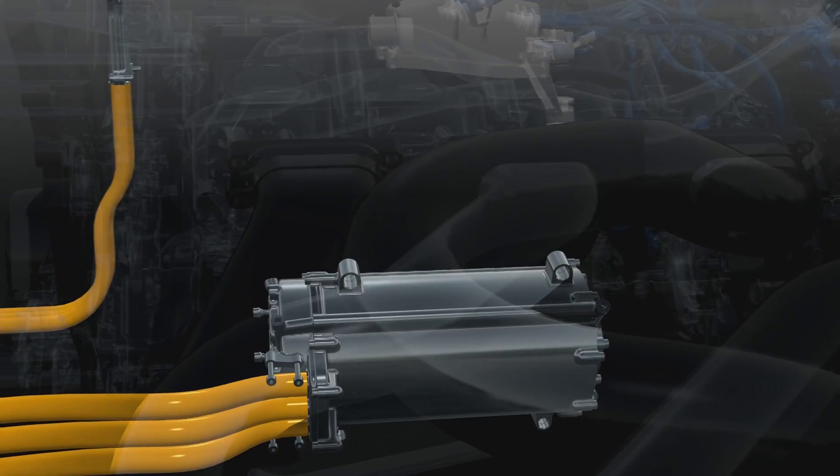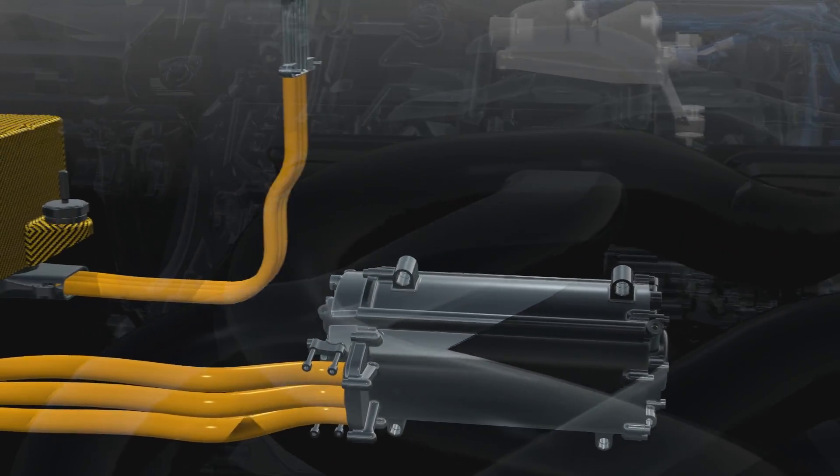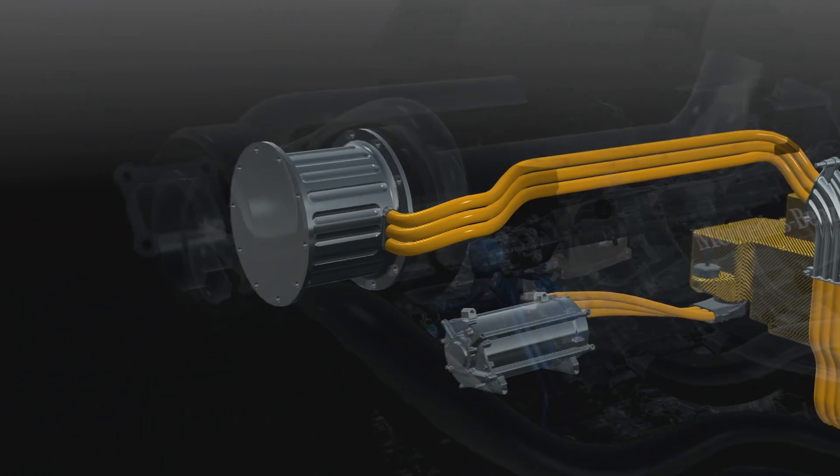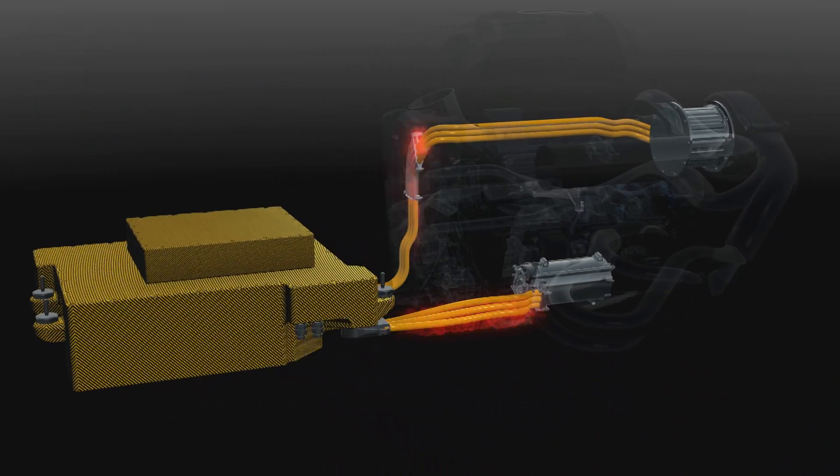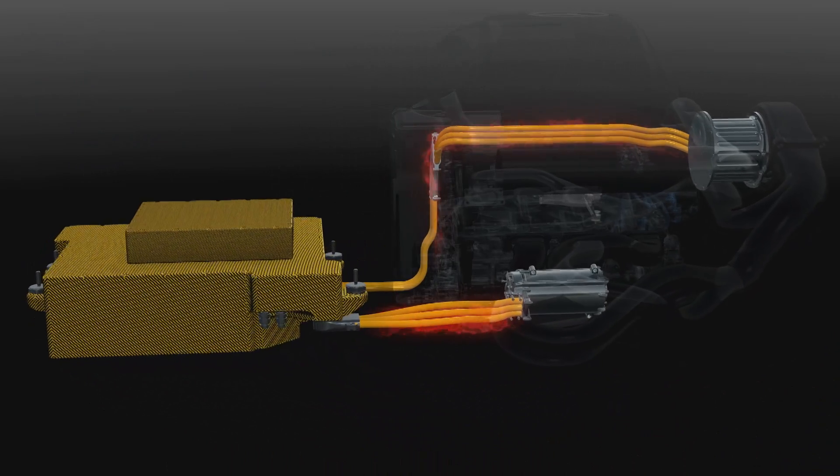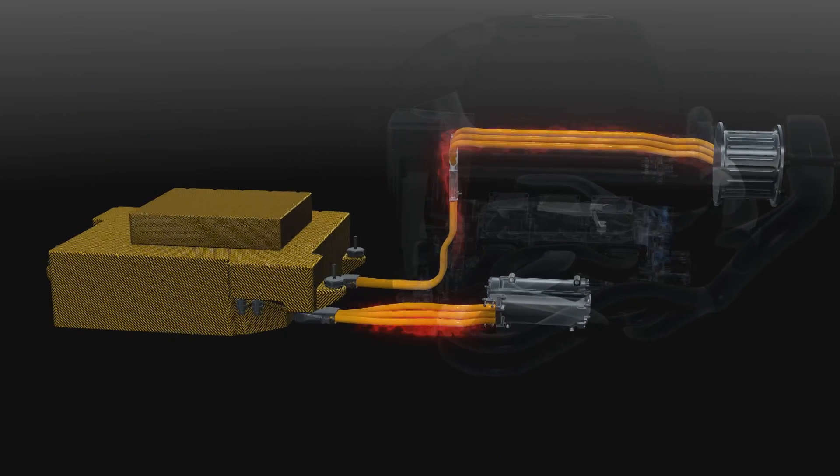The MGU-K harvests braking energy like the previous KERS system and the MGU-H harvests the turbo energy. Both send power to the energy store when working as generators and when deployed act as motors fed by the battery or each other's energy.